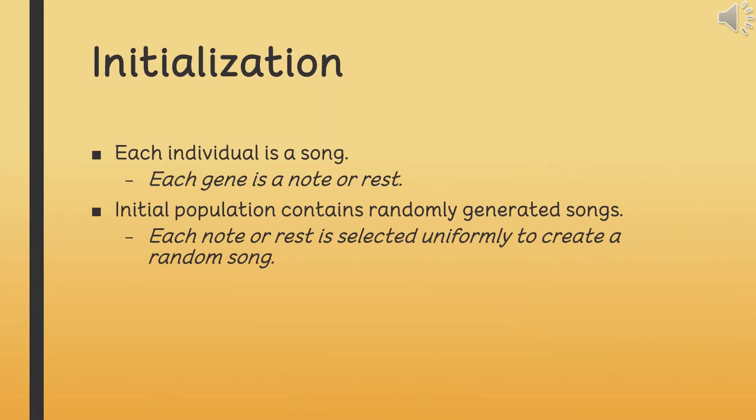As you may guess, each individual is a song, and each gene is a note or rest with its beat. Initial population contains randomly generated songs. It means each note or rest is selected uniformly to create a random song.